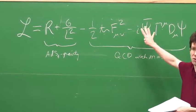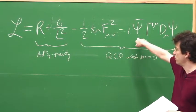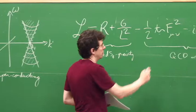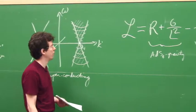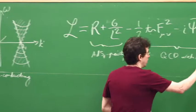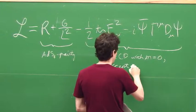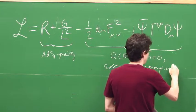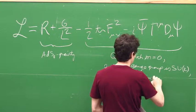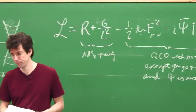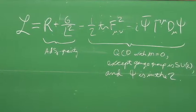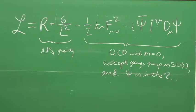It's QCD almost, except the gauge group I will choose to be SU(2), not SU(3), and psi is in the fundamental doublet. There's only one type — though for the calculations I'm going to do, you can have any number of flavors, and each one would give you a copy of the same Green's function.